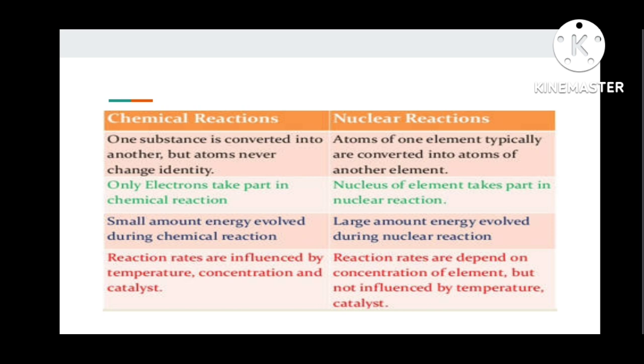Now here is some difference between chemical reaction and nuclear reaction. For chemical reaction, one substance is converted into another, but atoms never change their identity. For nuclear reaction, atoms of one element are typically converted into atoms of another element. Only electrons take part in chemical reaction. Nucleus of elements take part in nuclear reactions. Small amount of energy evolved during chemical reaction, but large amount of energy released during nuclear reaction.